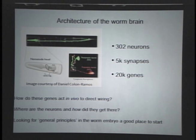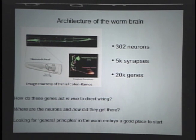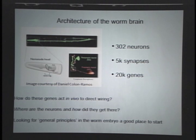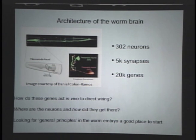With a microscope you can really ask how genes act in vivo to direct wiring. You can ask: where are the neurons? How did they get there? Where are the axons? If you want to look for general principles, the worm embryo is a good place to start. There have been two, arguably three, Nobel Prizes involving this worm — one for programmed cell death, one involving GFP — and technologies like RNA interference are also very easy to deploy in this organism.